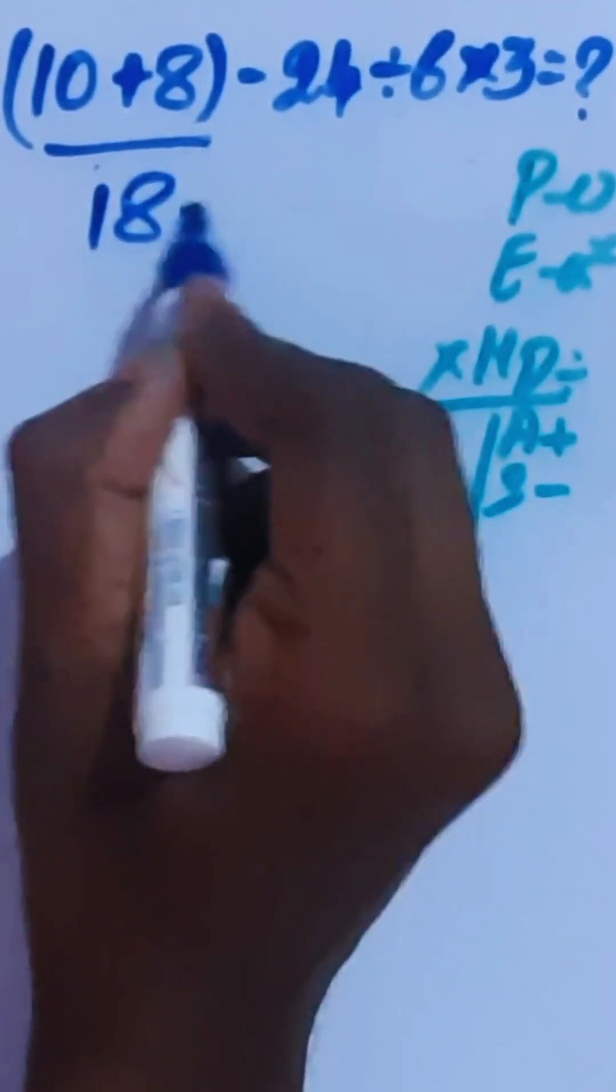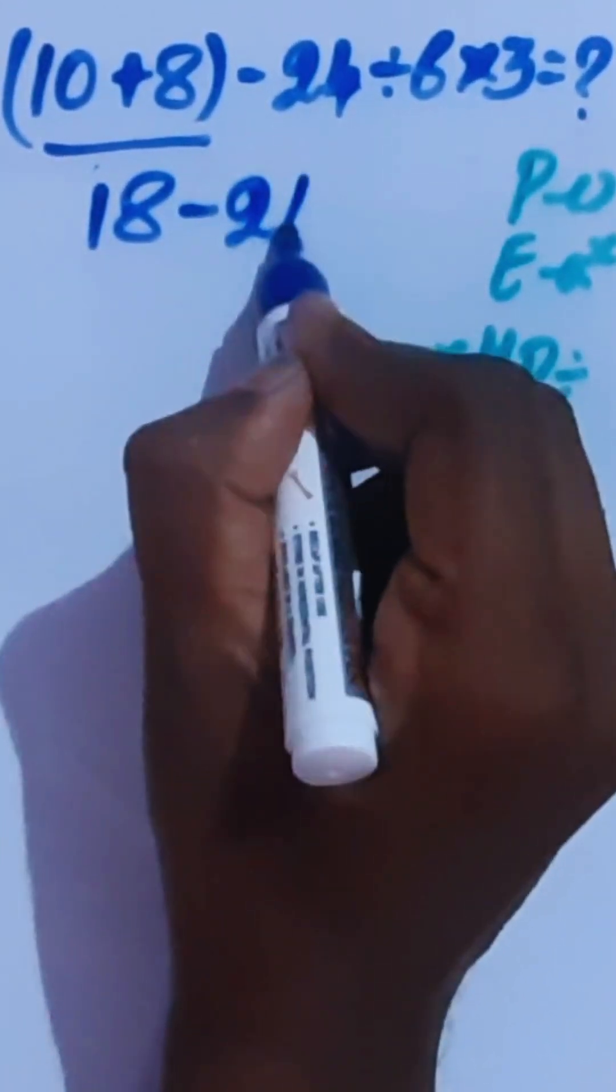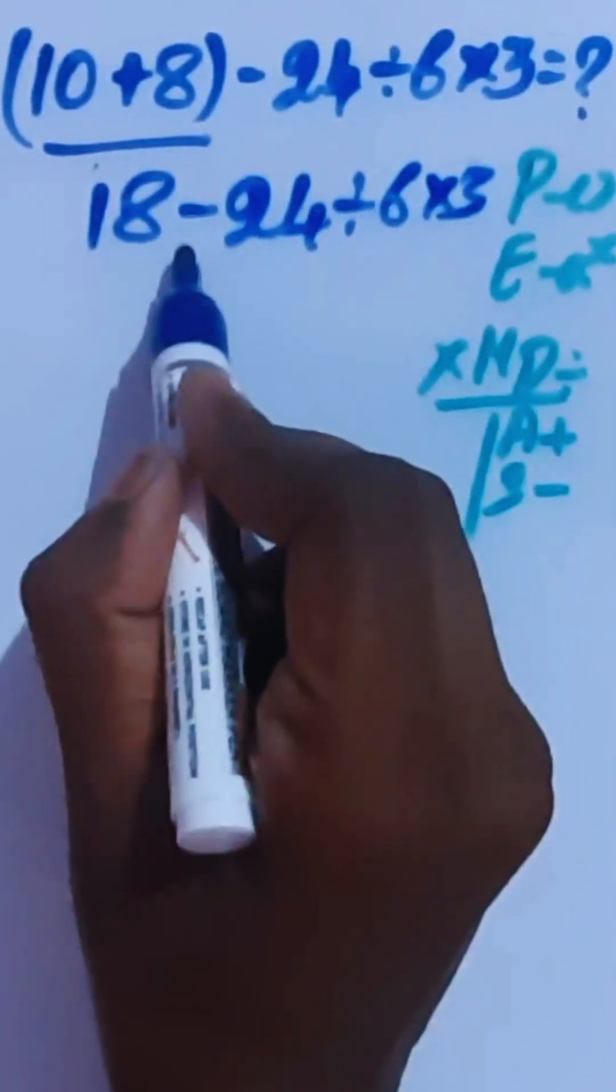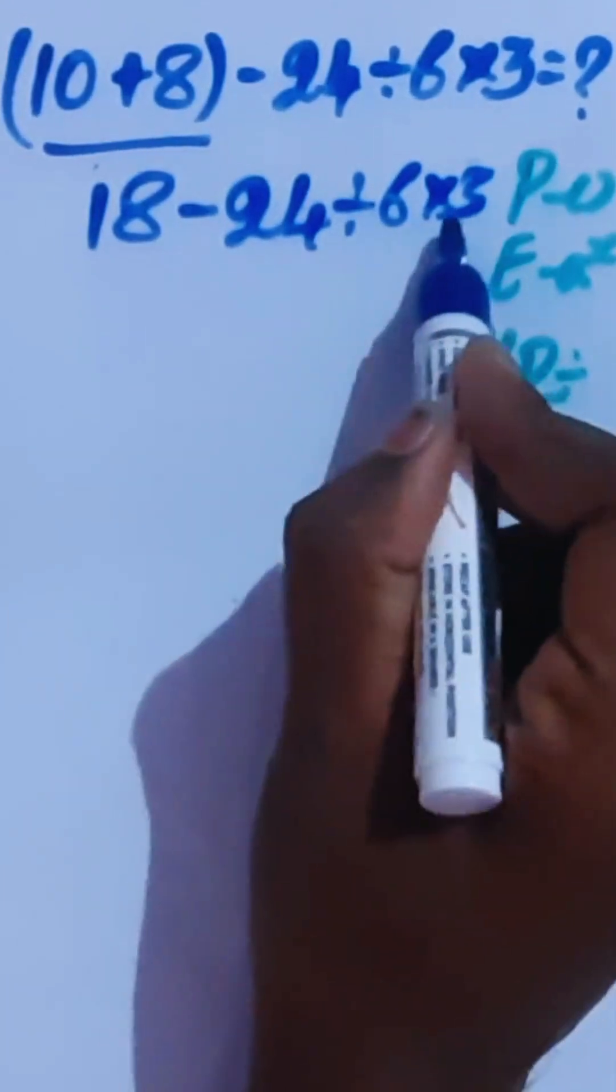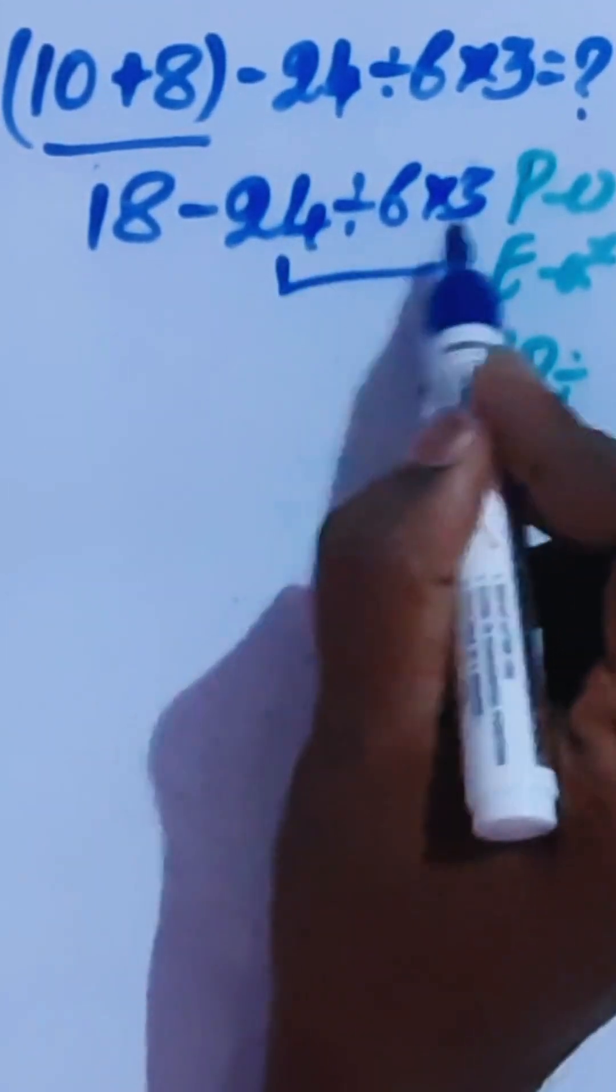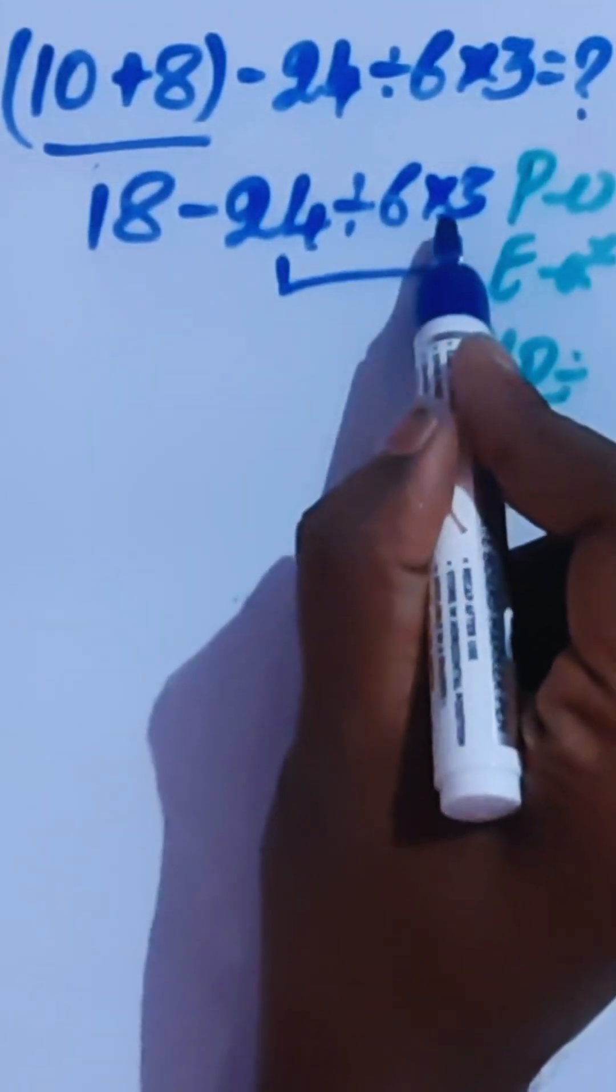So 18 minus 24 divided by 6 times 3. Here we have subtraction, division and multiplication. This is the higher priority, higher priority than this subtraction. So we have to do this. Here we have division also multiplication.